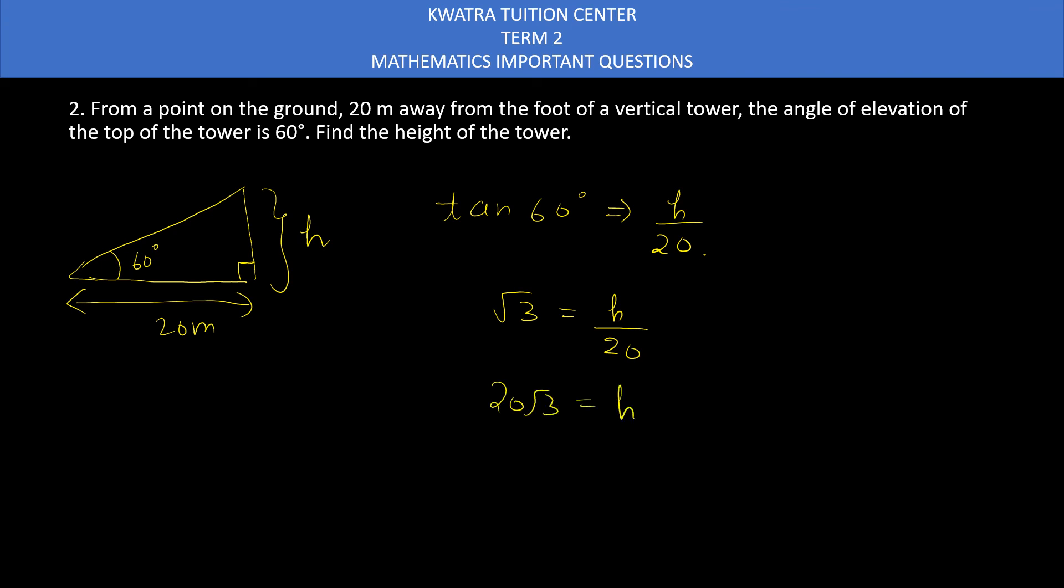H as it is, 20 as it is. And you can take 20 to the left side. It will be 20 root 3 is equal to h. So yes, the height of the tower is 20 root 3 meters.